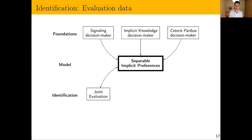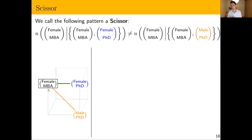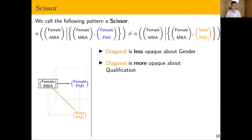Now the first type of data: joint evaluation. We observe the utilities of both elements in the comparison set. What we look for are called scissors — named because they look like a scissor cutting something. A scissor is a case where we see the same bundle — say a female MBA — evaluated twice in different comparisons, and we're interested in how the utility of this bundle changes when the comparator changes. If it changes in systematic ways, we can identify implicit preferences over her attributes.